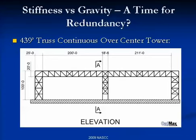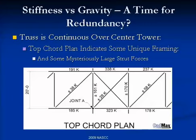Now, stiffness versus gravity — a time for redundancy. Here's a current project: a 439-foot truss, continuous over a center tower. This looks like a fabricator's dream when you first look at it — really heavy members, lots of tonnage. But take a look at the top chord plan and you're starting to get some surprises: there are little diagonal lines with big forces coming from somewhere — quite a mystery.